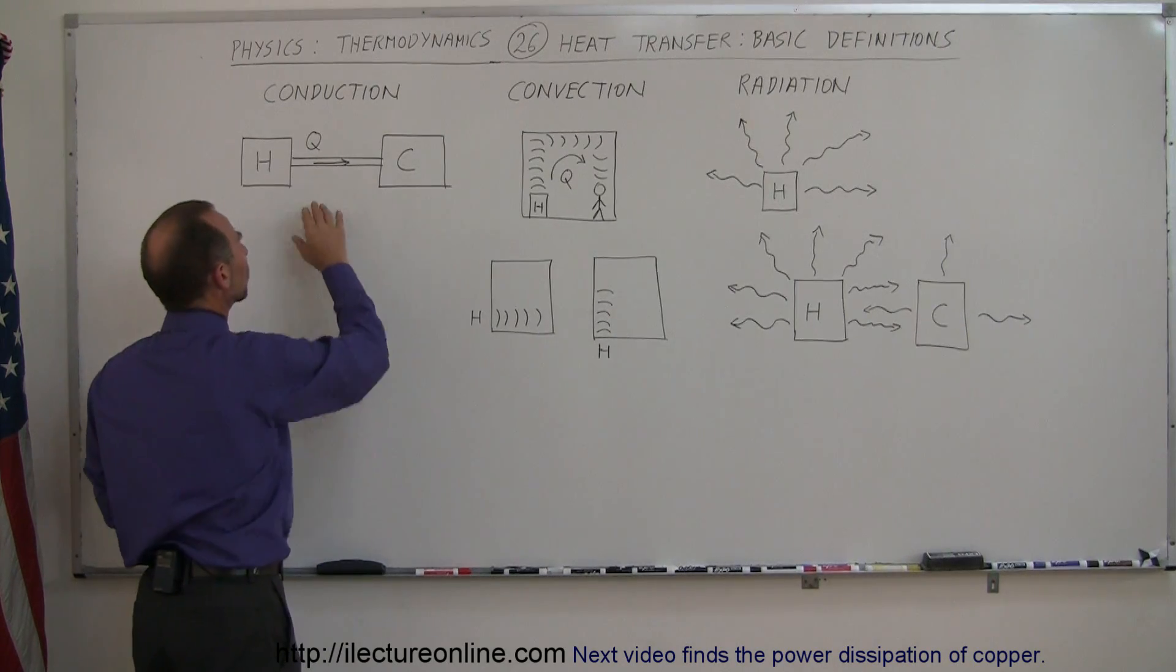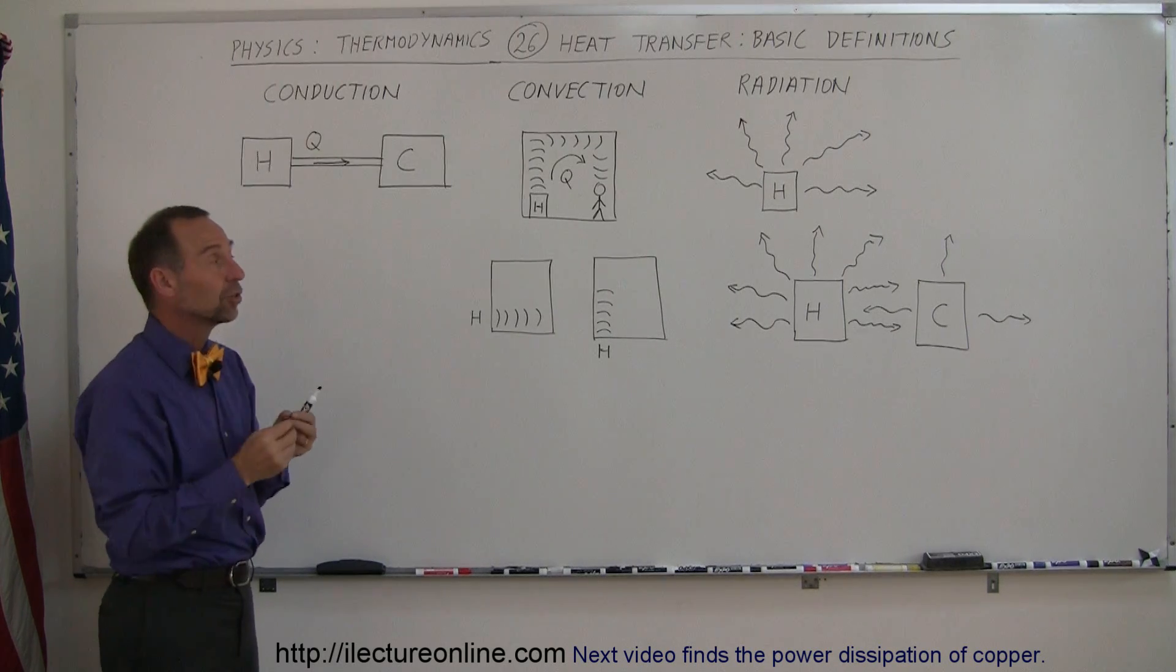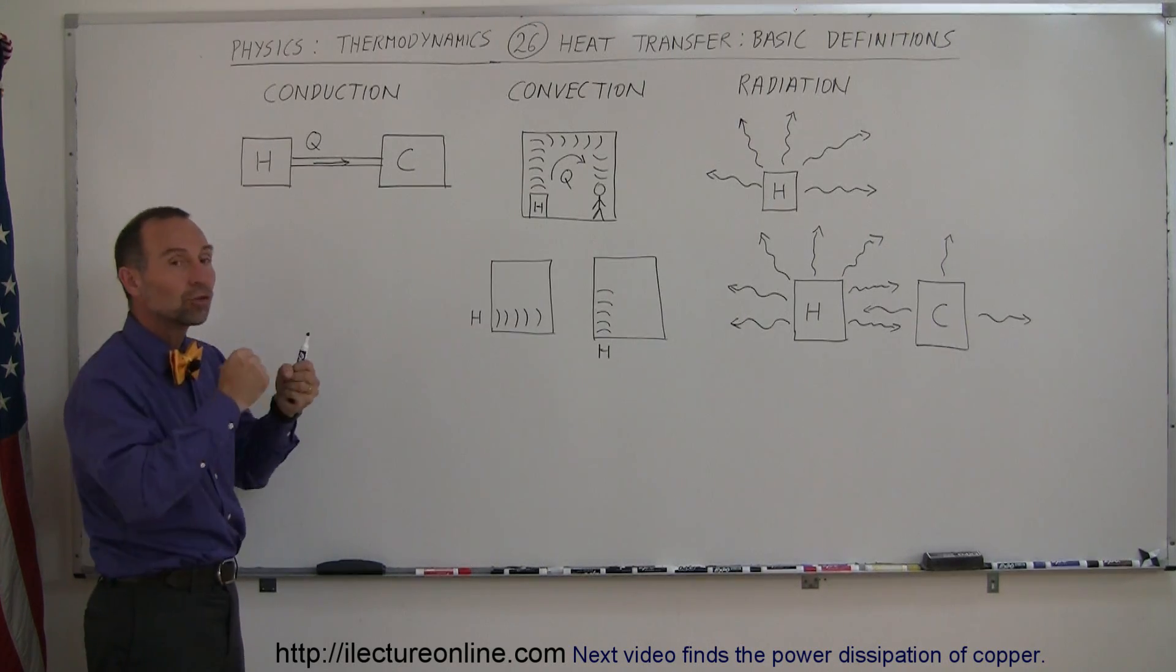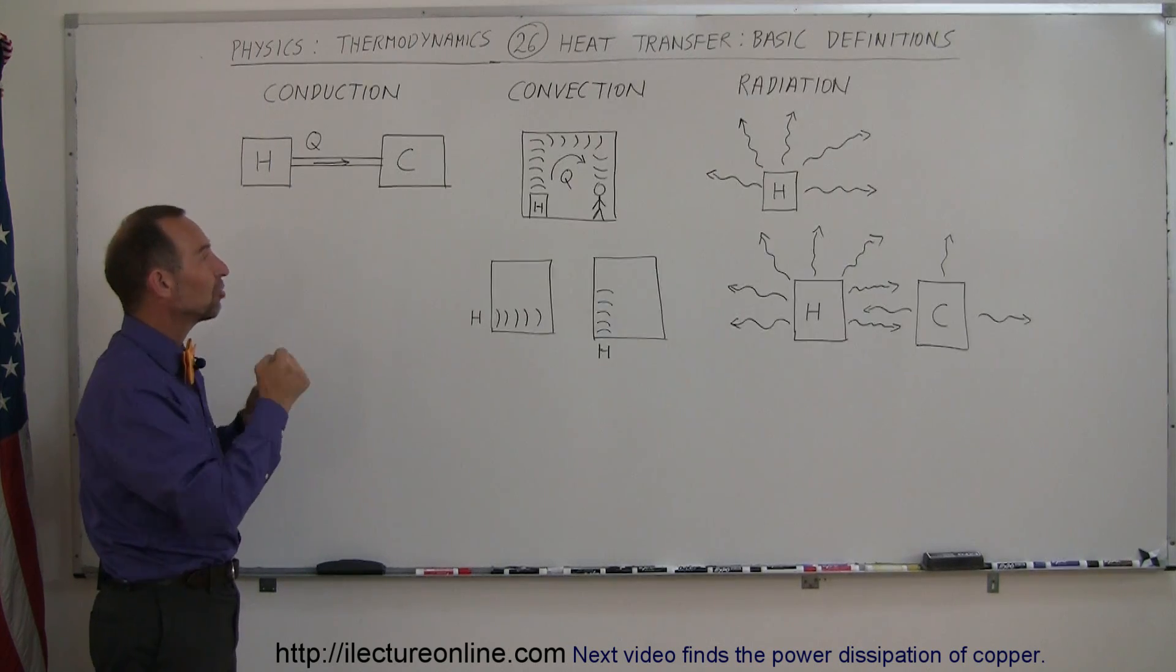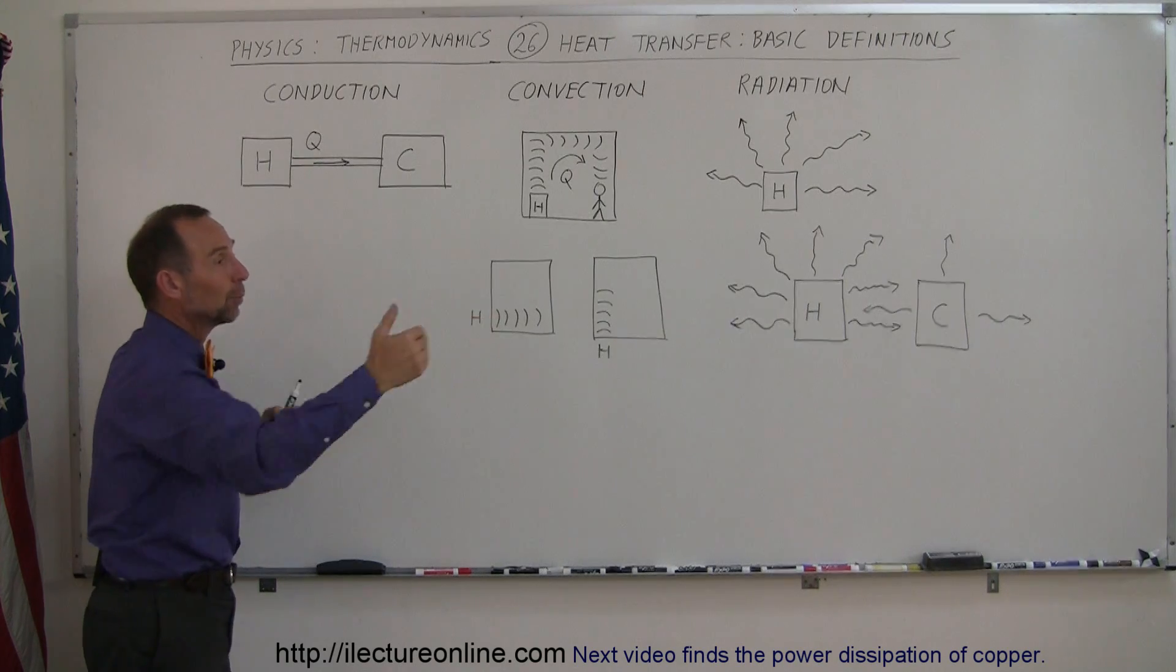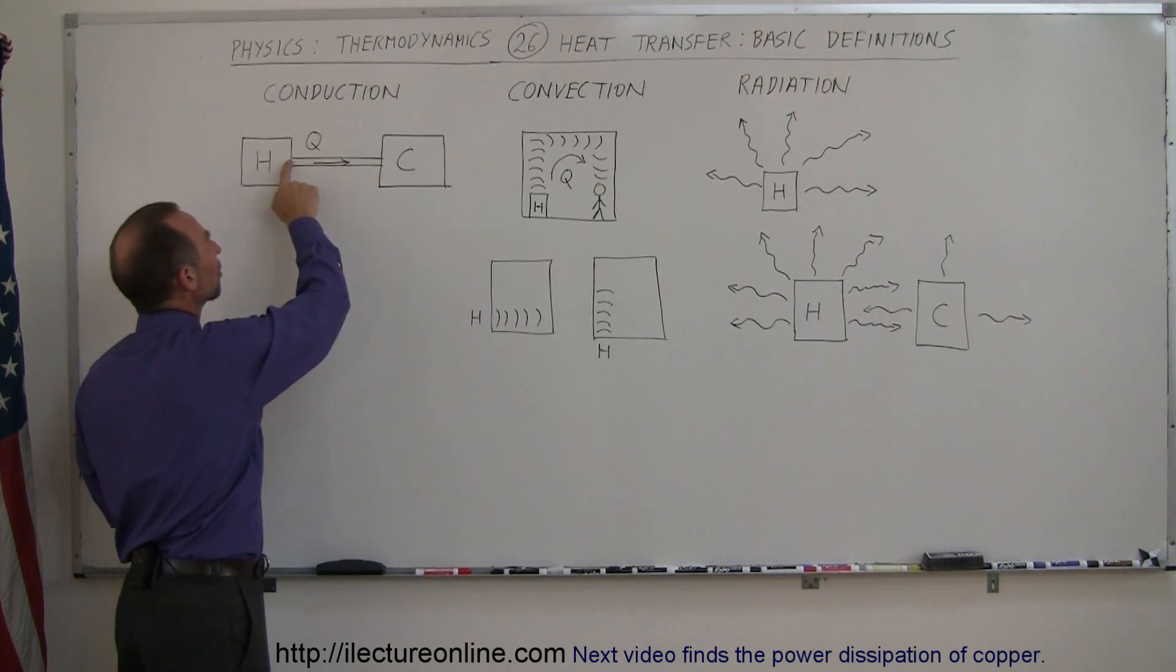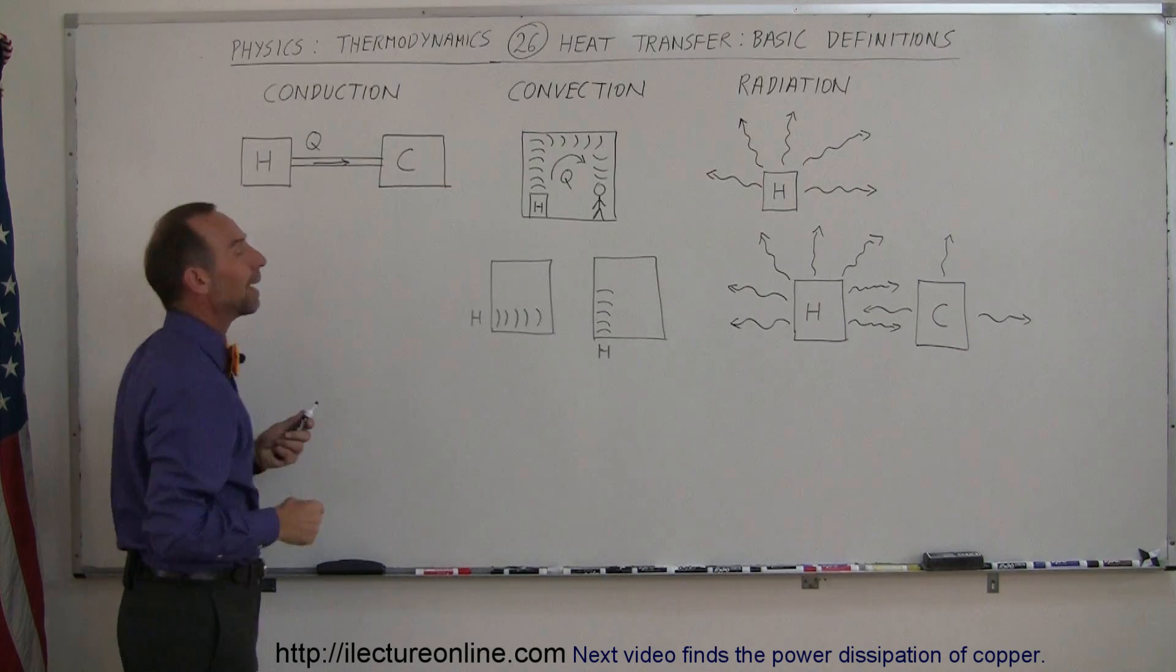For conduction, the way heat travels across a conductor or heat conductor is the physical motion of the atoms. The vibration will be transferred to the molecules next to it. They will begin to vibrate more and it will be transferred. So if the vibrational mode of the hot object can be transferred through a path, we then say that that path is a heat conductor.